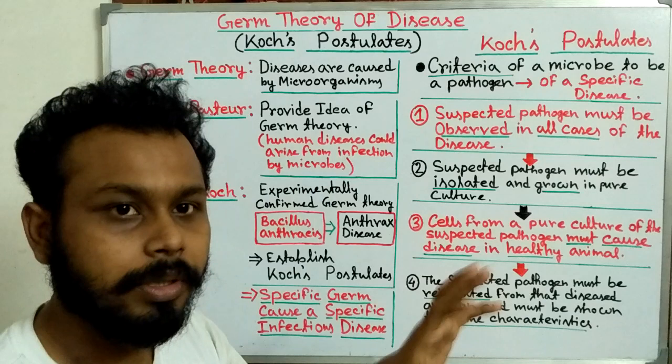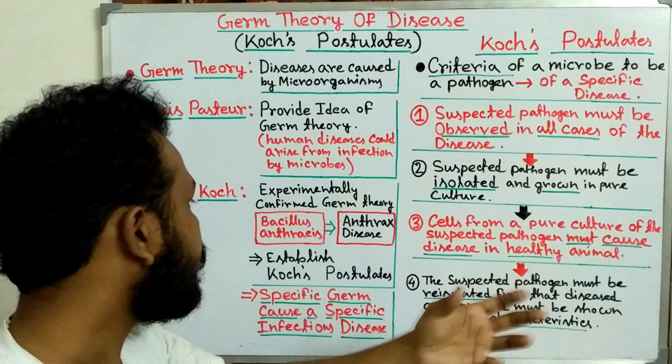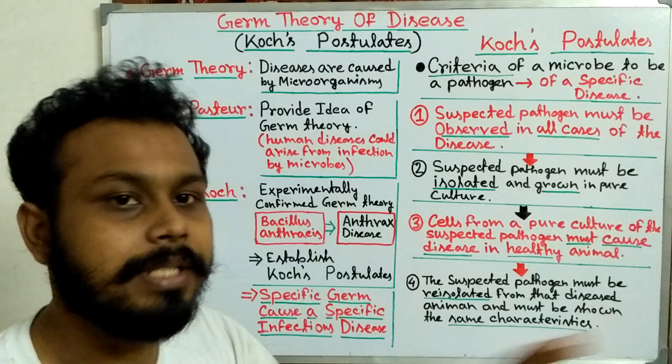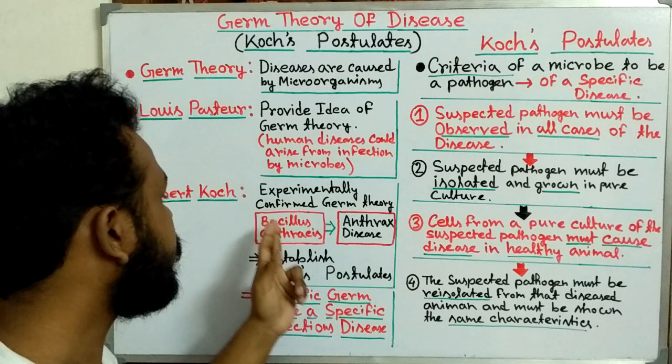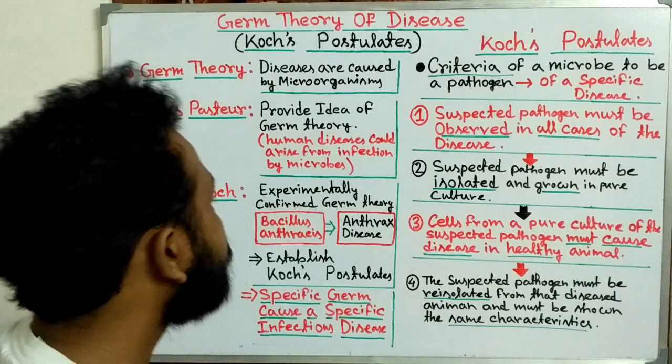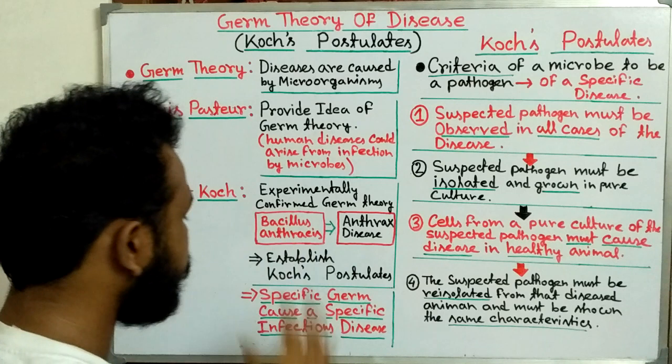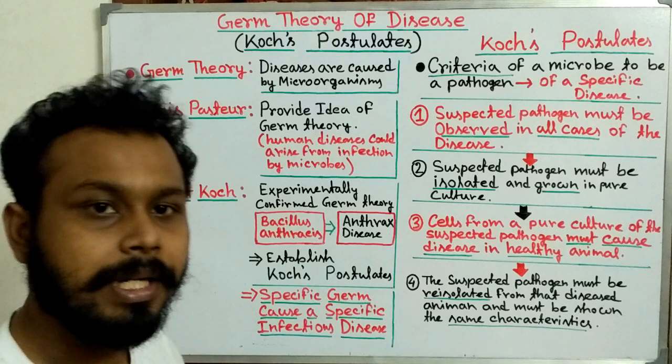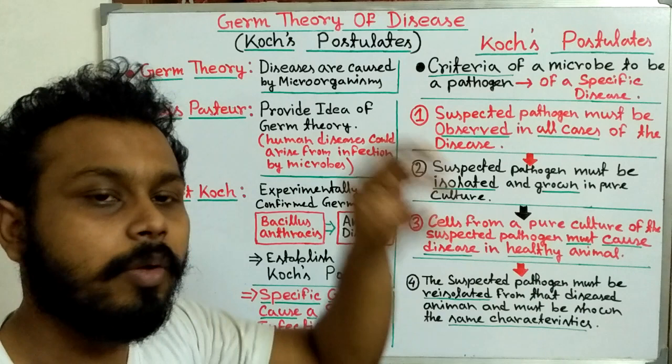When he re-isolated the microorganism from those healthy animals that showed the same disease symptoms, the characteristics of that microorganism were the same as Bacillus anthracis. From this he concluded that anthrax disease is caused by the Bacillus anthracis bacteria. He established that a specific germ can cause a specific infectious disease — one specific germ is responsible for one particular disease.